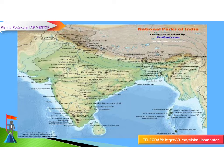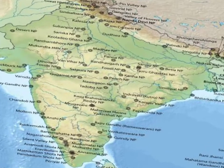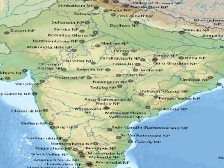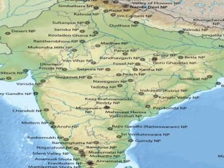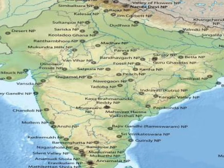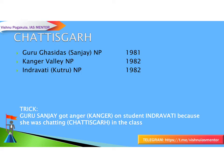Now let's see the national parks in Chhattisgarh. There are three national parks in Chhattisgarh: Guru Ghasidas National Park, Indravati (Kutru) National Park, and Kanger Valley National Park.